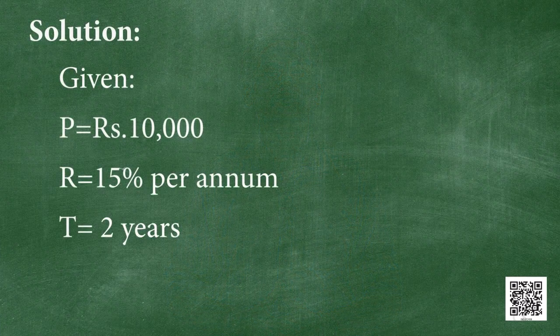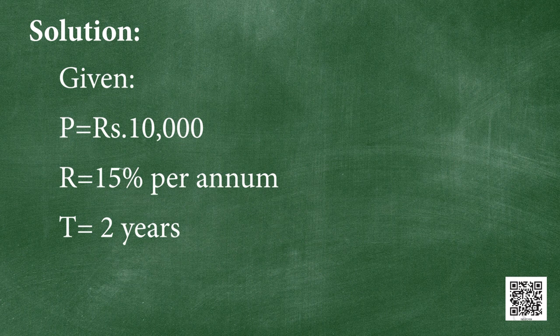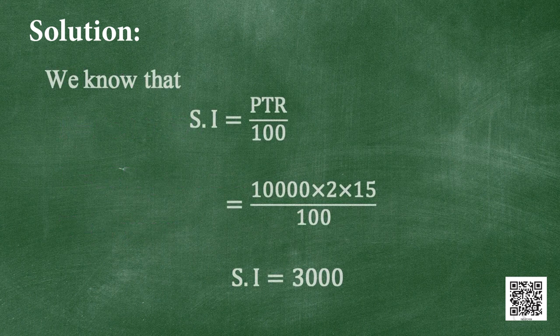Let us solve this problem using the formula. The given data: Principal P = rupees 10,000, Rate R = 15% per annum, Time T = 2 years. Simple Interest = PTR divided by 100 = 10,000 multiplied by 2 multiplied by 15, divided by 100. Upon simplification, Simple Interest = rupees 3,000.